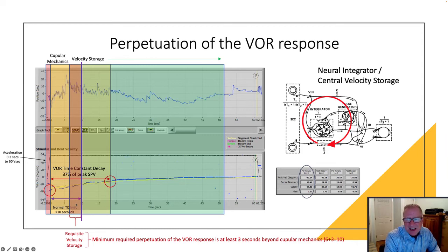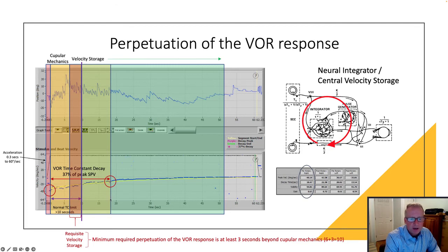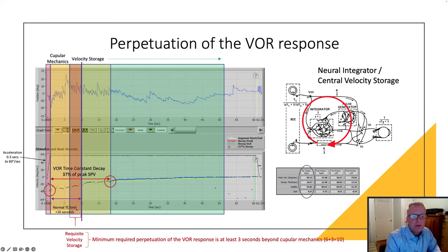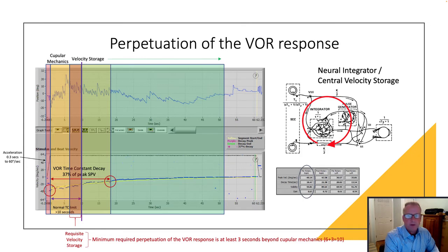And that's not always easy for the central neural integrator to produce. In our example here, it produced a decay response much longer than that — about 18.5 seconds. But really, all we ask is that the neural integrator produce an additional three seconds beyond cupular mechanics, and we call that normal. This assesses the health and integrity of that neural integrator system.